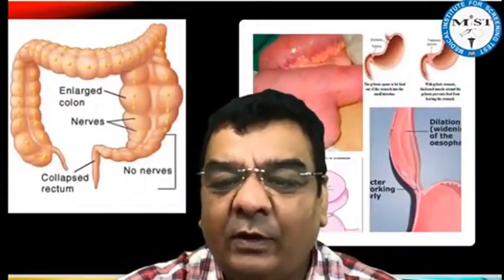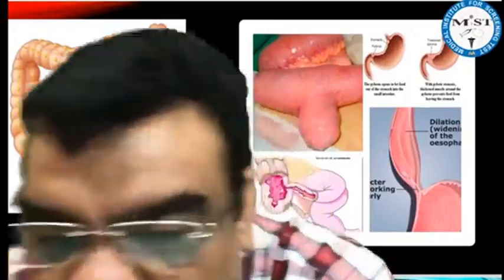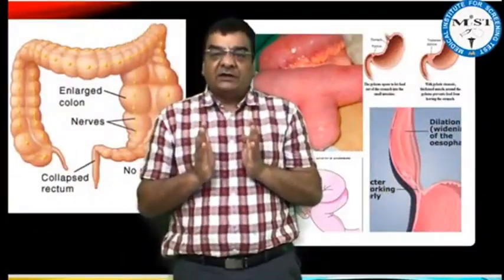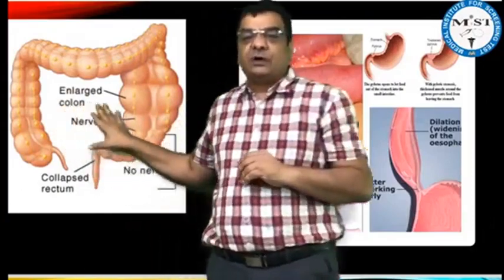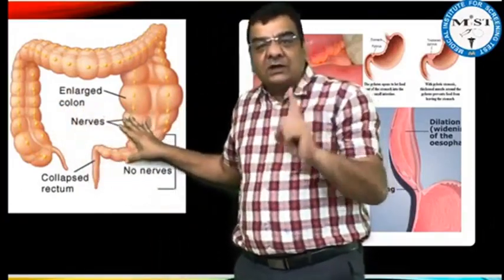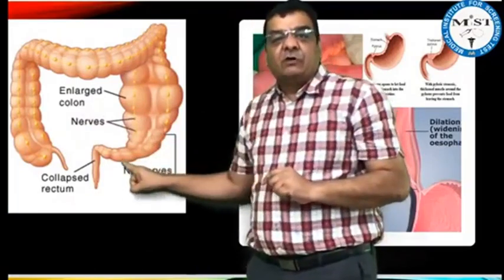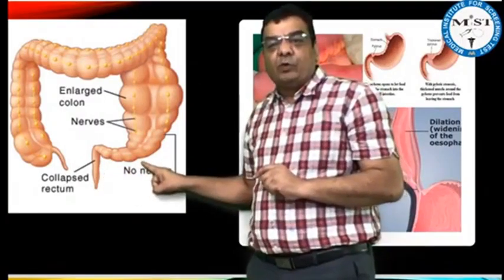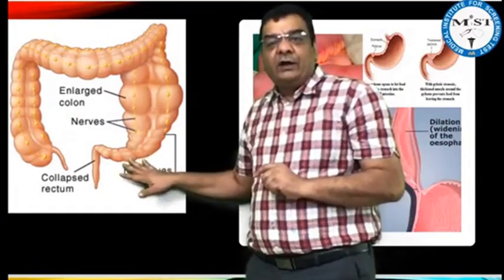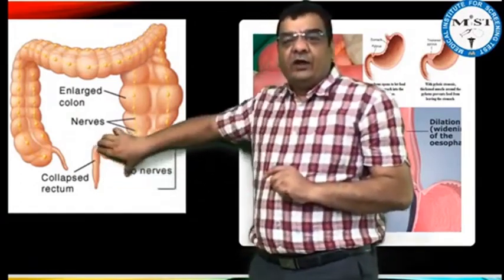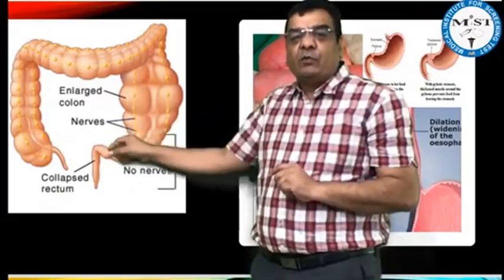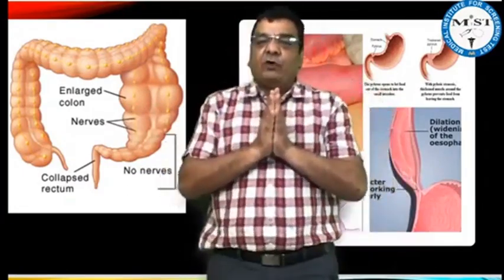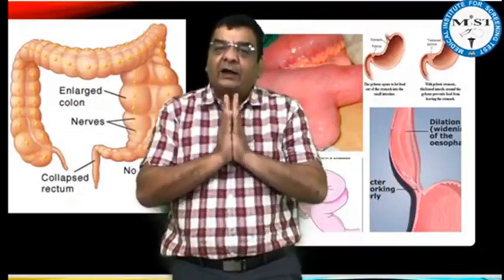The examiner wants to know which condition mimics Hirschsprung's disease. In Hirschsprung's disease, the histologic abnormality is absence of ganglion cells — there are no ganglion cells. The most common site is the rectum; it can also affect the sigmoid colon. This creates a traffic jam situation: if there is no peristalsis in this segment, the proximal bowel is going to dilate.